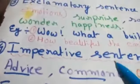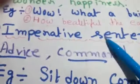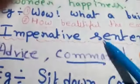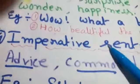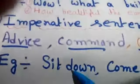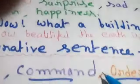Number four is the imperative sentence. In this sentence, we give a command, advice, order, or a polite request. For example: 'Sit down.', 'Come here.', 'Close the window.' These are examples of the imperative sentence.